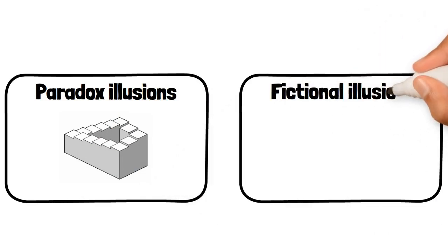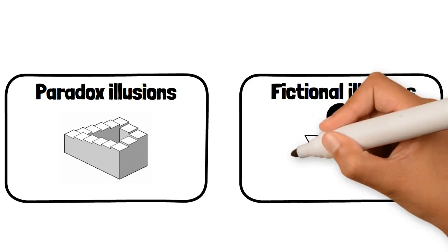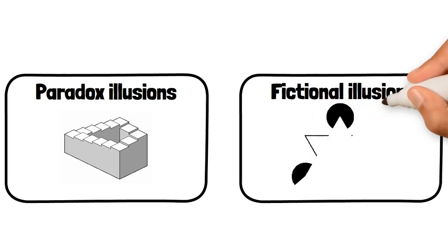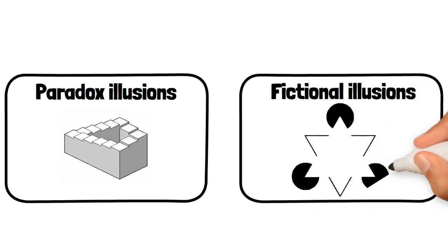Fictional Illusions: These illusions involve seeing something that isn't actually there, like the Kanizsa Triangle, where the brain perceives a triangle even though no triangle is drawn, just three Pac-Man-like shapes arranged in a way that suggests it.